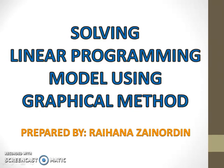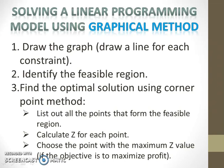Solving a linear programming model using graphical method involves three steps: first, draw the graph; then identify the feasible region; and finally, find the optimal solution.